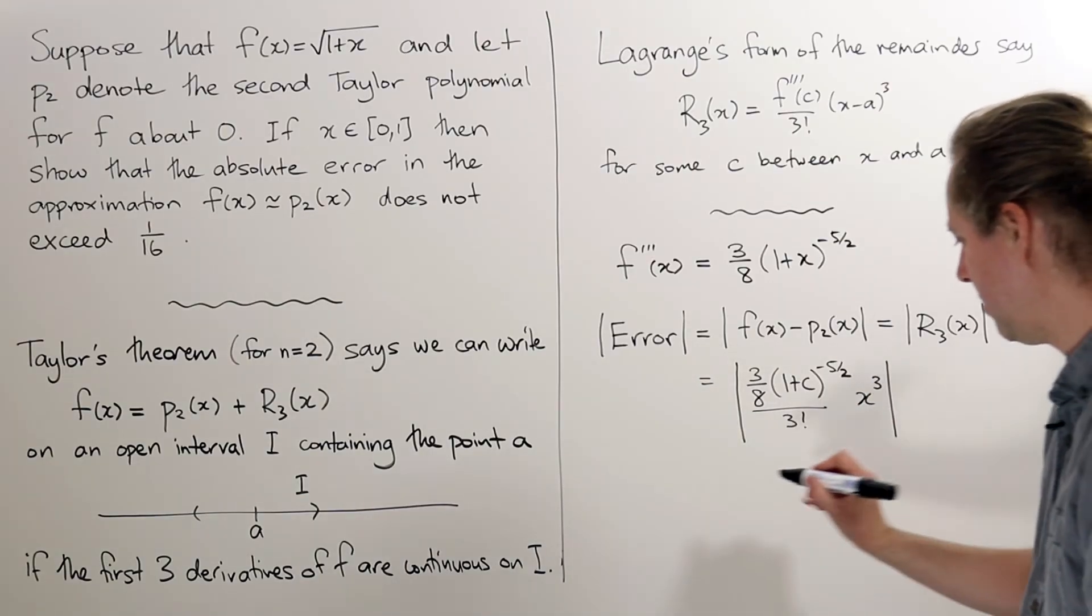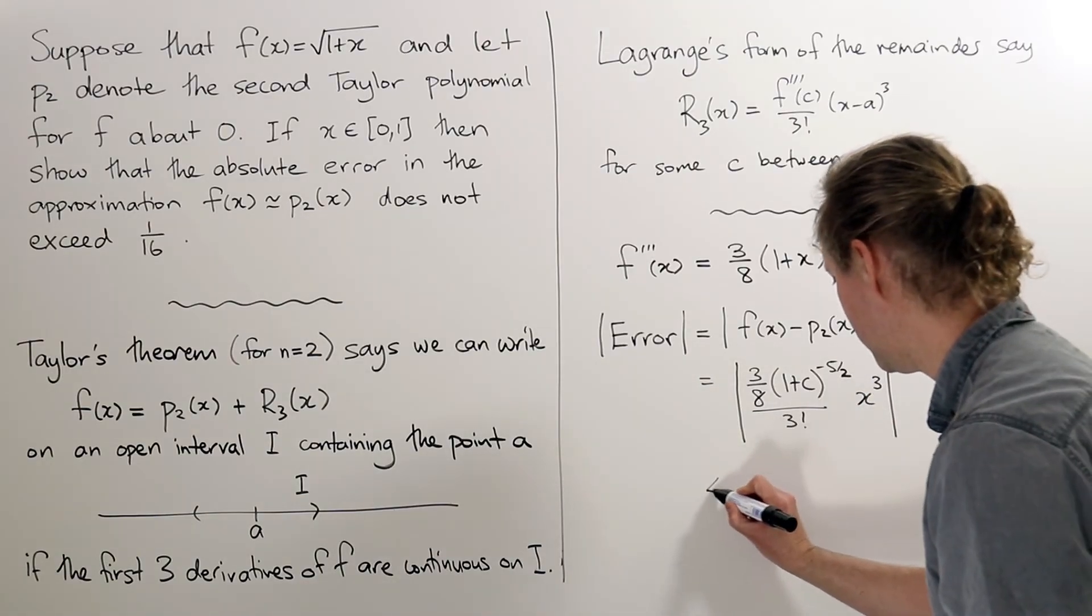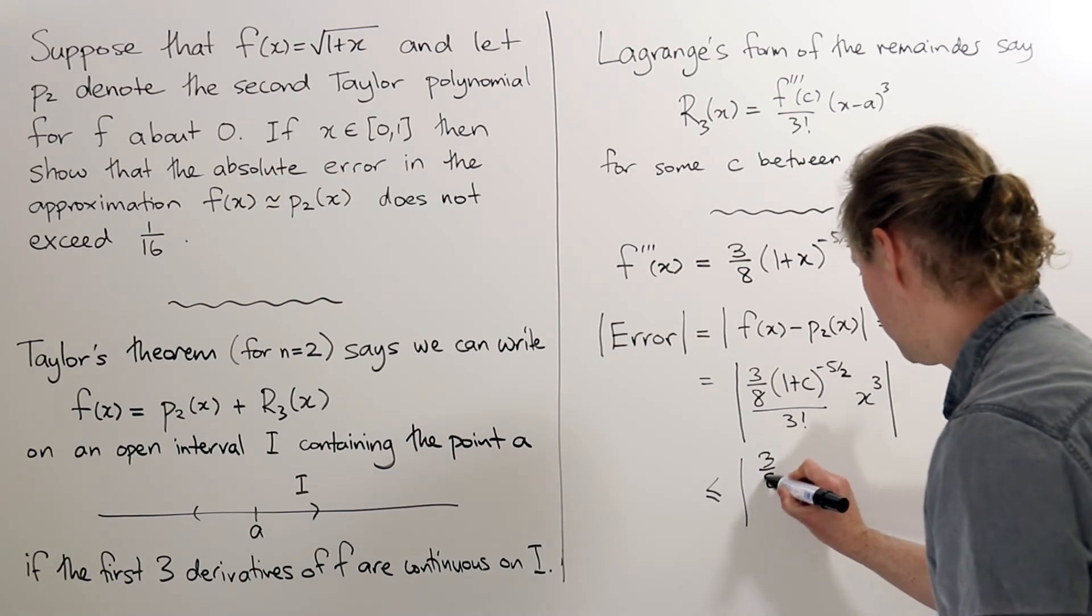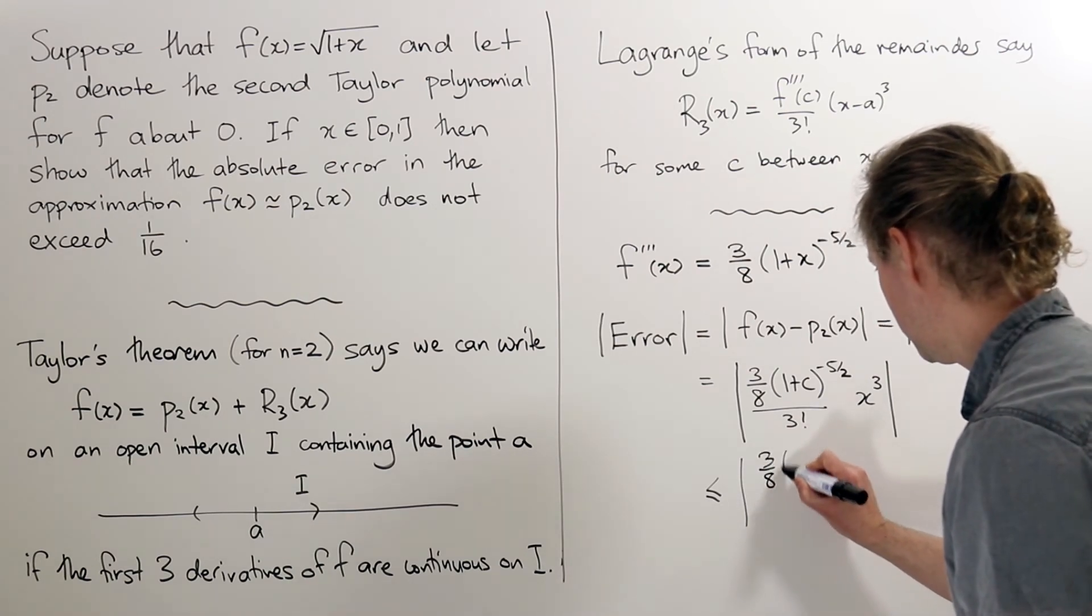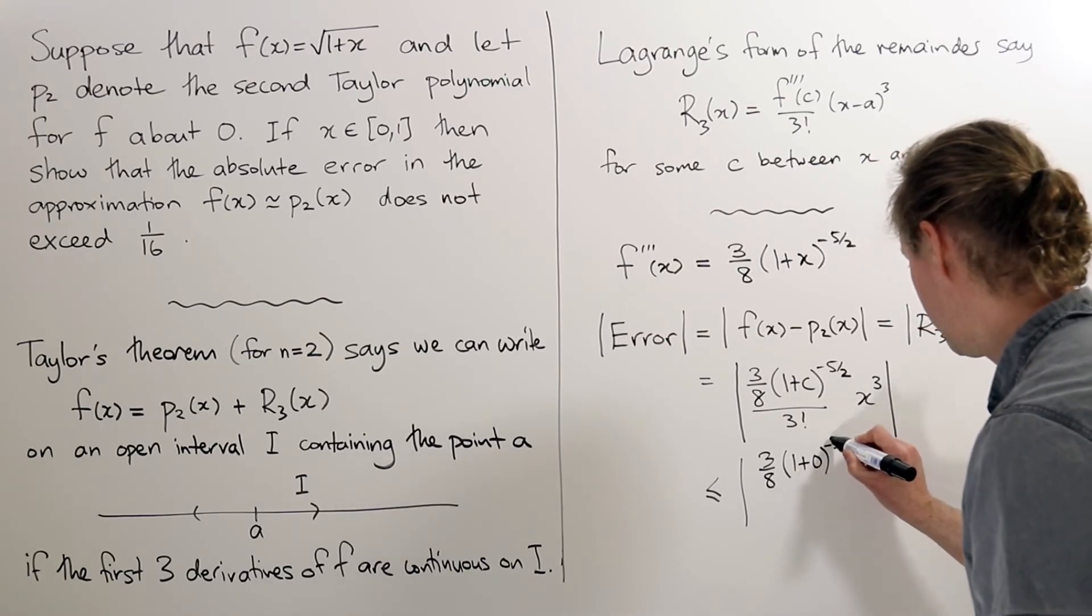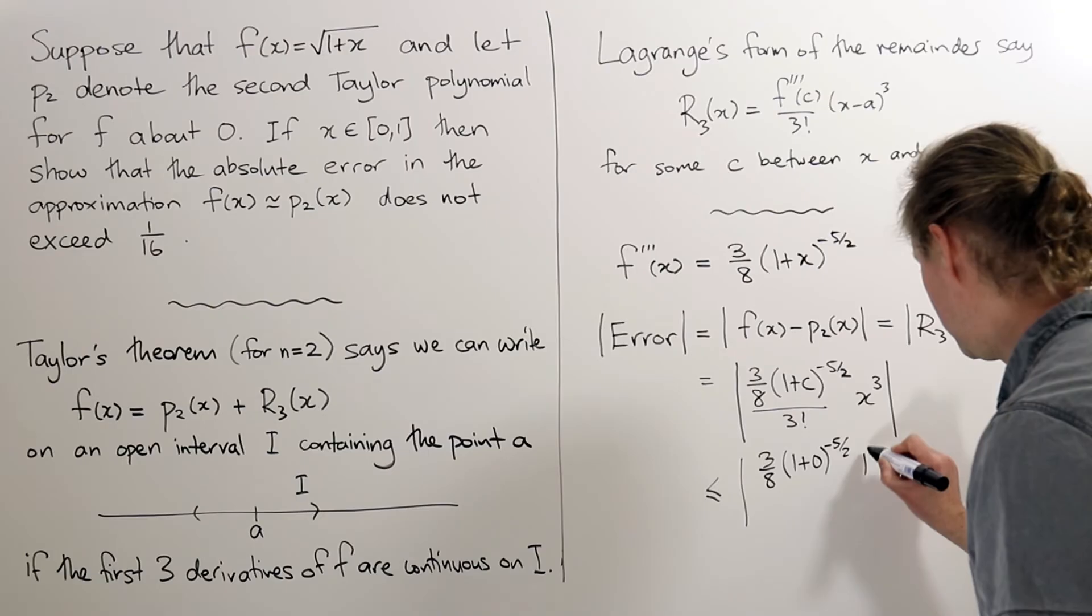So we can take, if we take c to be 0, then that would be the smallest possible contribution. So whatever x and c are, we don't necessarily know, we do certainly know that this is less than or equal to what we would get if we just made c 0 and x 1.